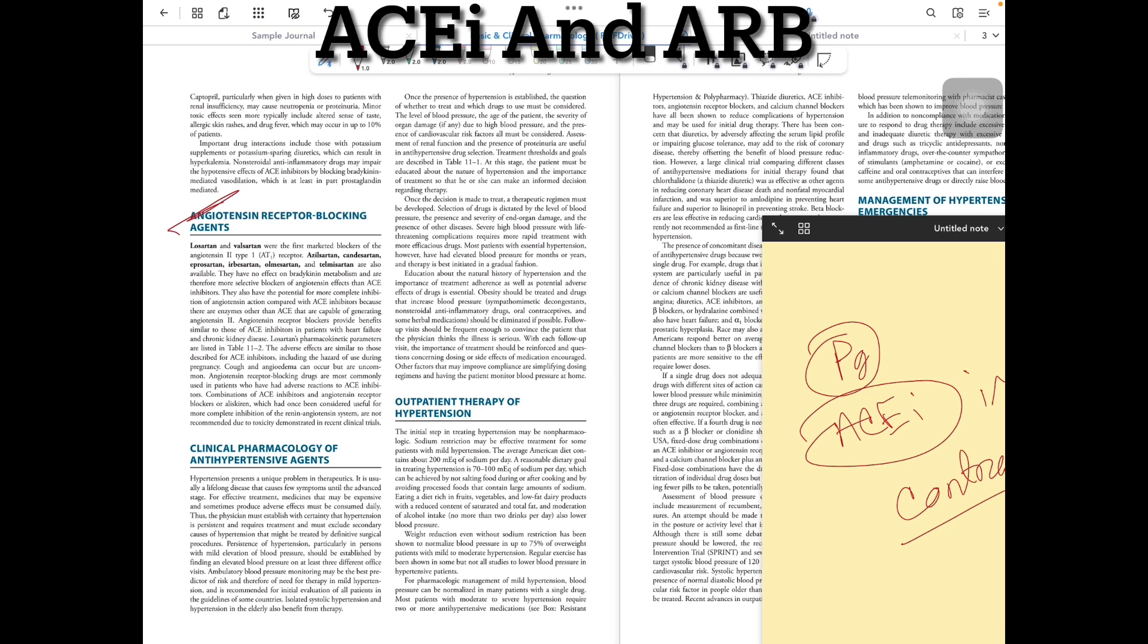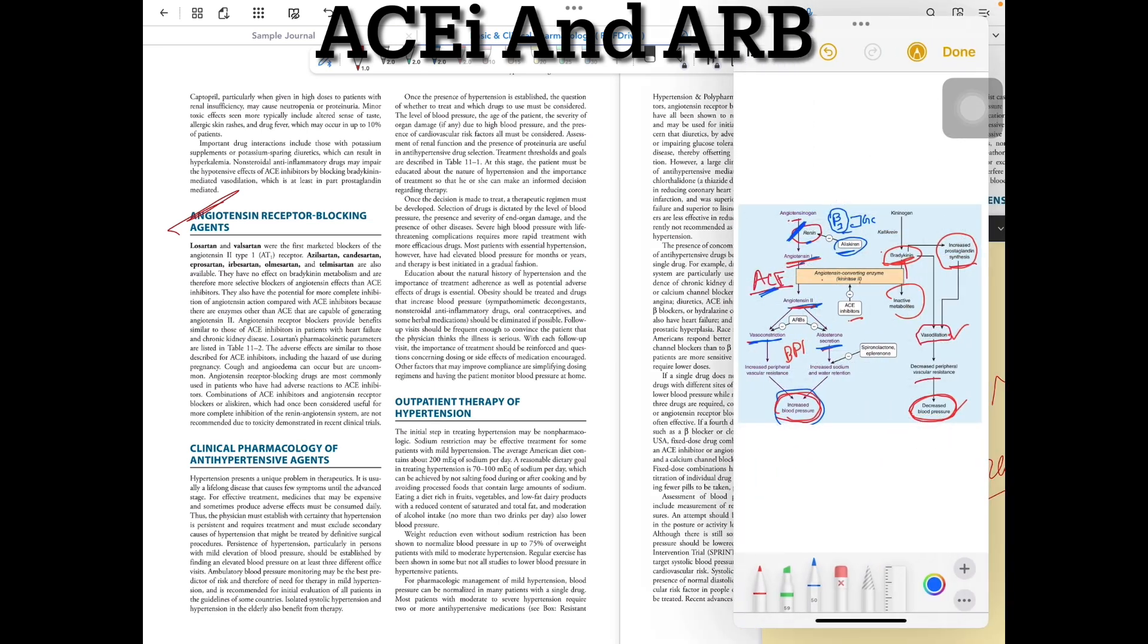ARBs - Angiotensin Receptor Blockers. The mechanism is the same. Instead of blocking ACE, we block the angiotensin receptor itself. Blood pressure will fall, BP will decrease.